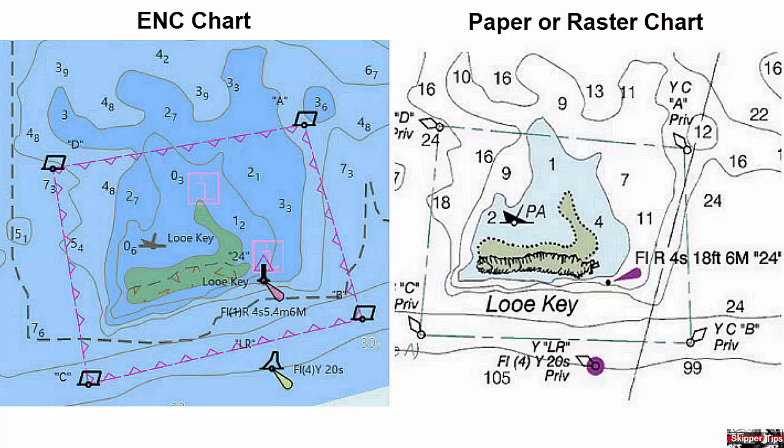On the chart to the right, you see the typical paper or raster chart image. Note first how the buoys are slanted — aids to navigation are slanted away from any navigational information that may be covered up. On the ENC chart, all buoys will be slanted in the same direction. This is much more intuitive and easier to read.